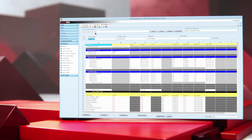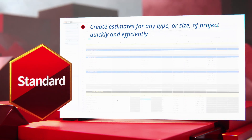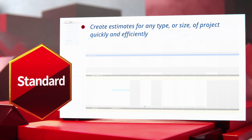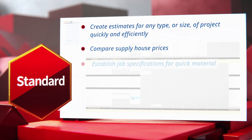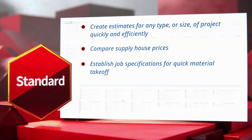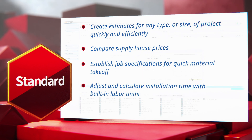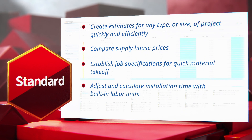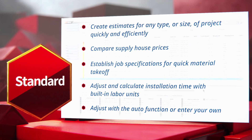IntelliBID comes in three versions. Standard lets you create estimates for any type or size of project quickly and efficiently, compare supply house prices, establish job specifications for quick material takeoff, adjust and calculate installation time with built-in labor units, and adjust with the auto function or enter your own.